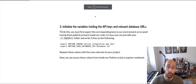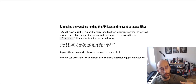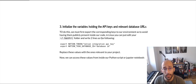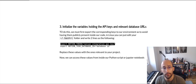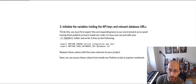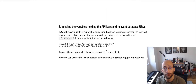Next we're going to initialize the variables holding the API keys and the relevant database URLs. To do this we first export the corresponding keys to our environment, to avoid putting API keys publicly on GitHub or having them in your codebase. So you're going to update your .bashrc file and write two lines: export NOTION_TOKEN with your Notion integration key, and export NOTION_TEST_DATABASE_ID with the database ID you got when you created the database.